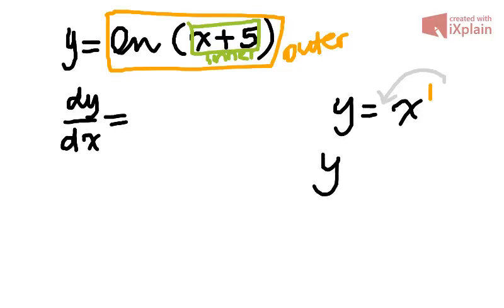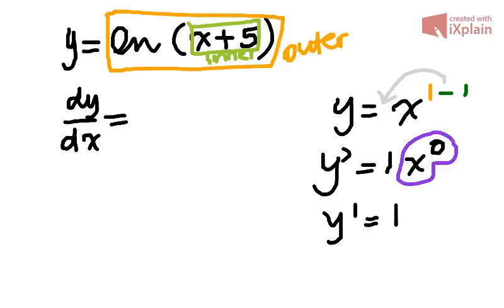1 comes to the front, so the derivative will be 1x, and then we have to take away 1 from the exponent. 1 minus 1 will be 0. Then we know that anything to the 0, x to the 0, will be 1. And 1 times 1 is 1. Hence, the derivative of x being just 1.